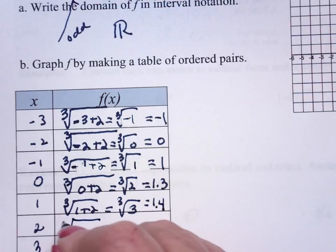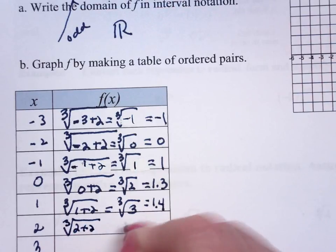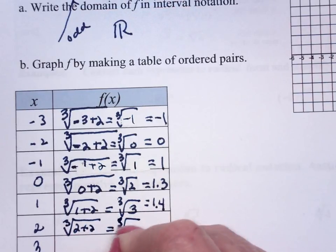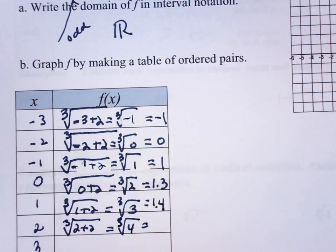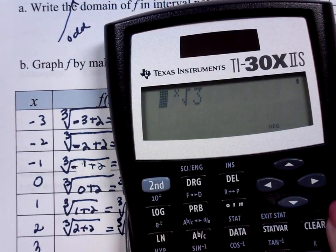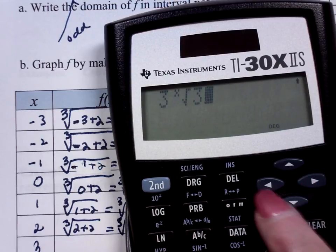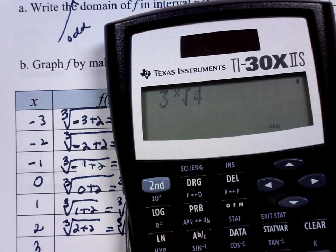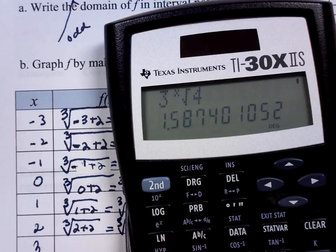And cube root of 2 plus 2, cube root of 4. And this is easy to do. Press the up arrow. And 1.6.